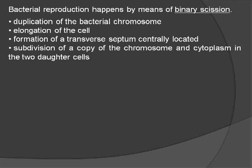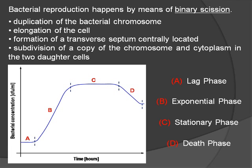First, there is the duplication of the bacterial chromosome, then the elongation of the cell and the formation of a transverse septum centrally located. Finally, the subdivision of a copy of the chromosome and cytoplasm into the two daughter cells.